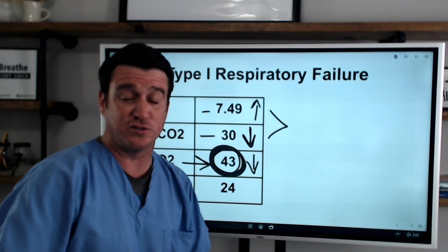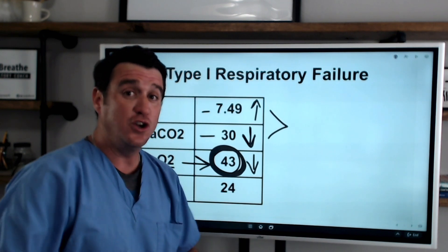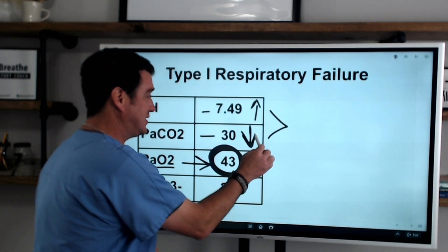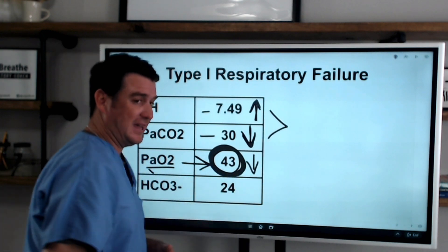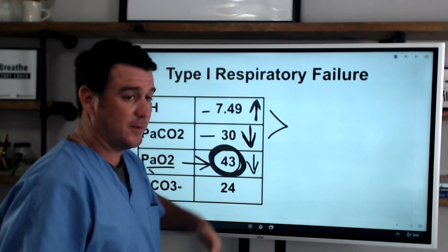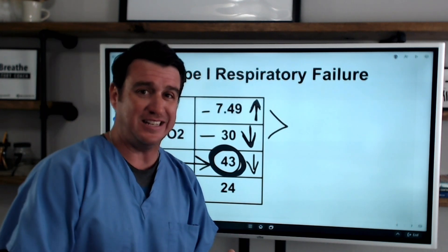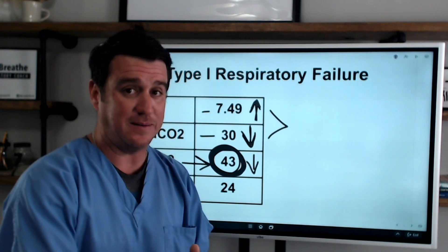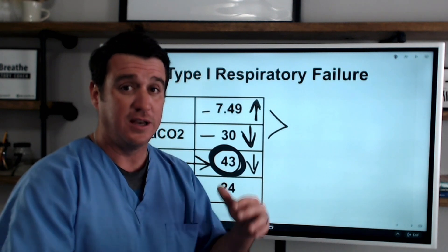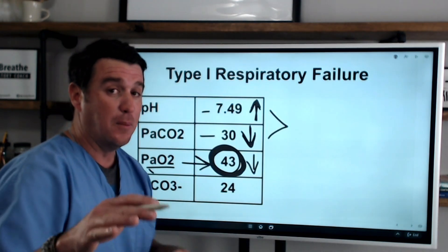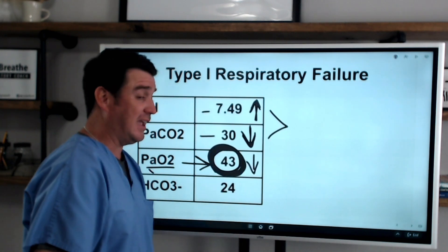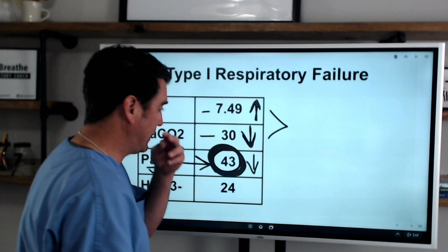The peripheral chemoreceptors are kicking in and saying you need to breathe more because we need more oxygen — that's why the CO2 is down and the pH is up. The patient is hyperventilating in response to the hypoxemic respiratory failure. They may not always present this way; maybe they present with a normal CO2 and normal pH. But most likely, most diseases begin with alveolar hyperventilation — a reduction in CO2 leading to a high pH because most diseases begin with a hypoxemic component. That's type one respiratory failure when looking at a blood gas.